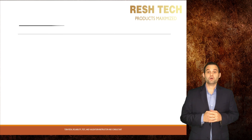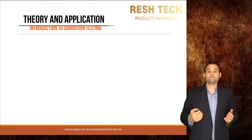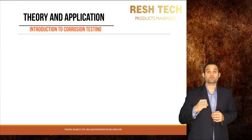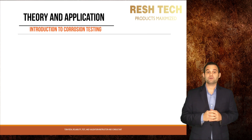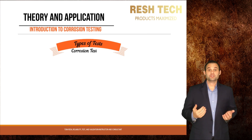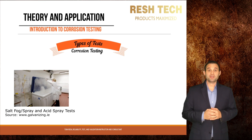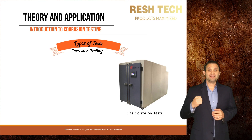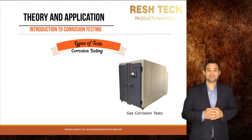Let's go ahead and cover theory and application for corrosion testing. Some of the types of tests include salt fog and spray, acid spray testing, immersion testing, and gas corrosion testing.